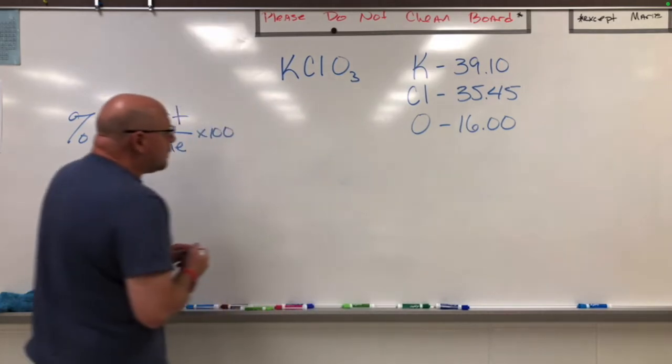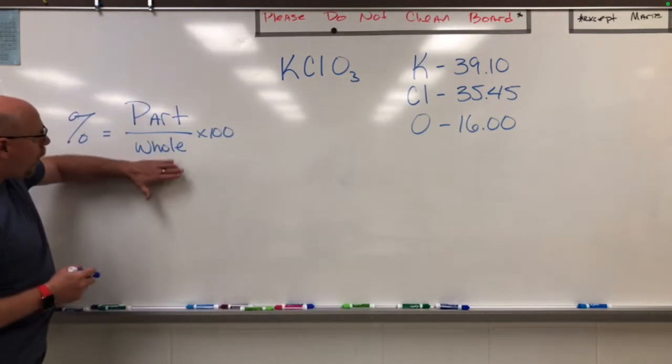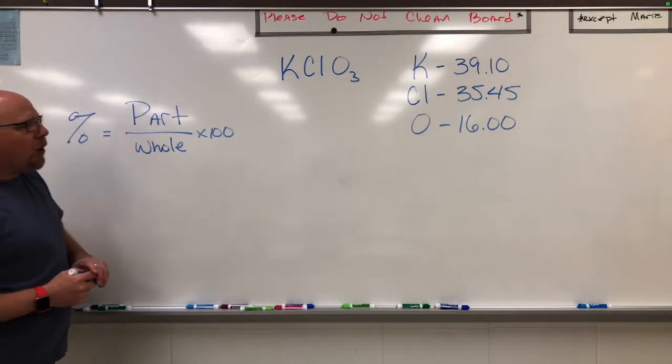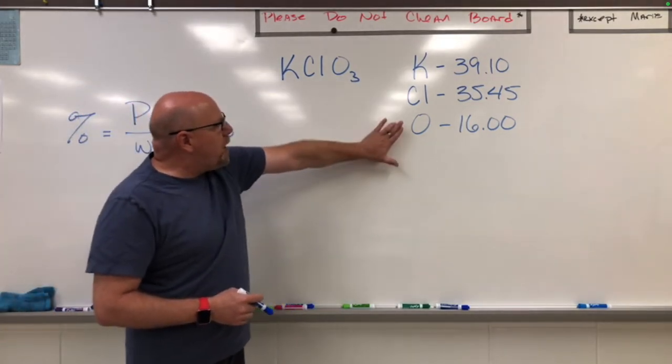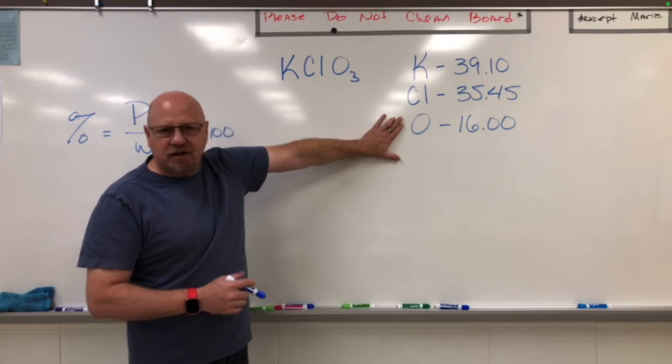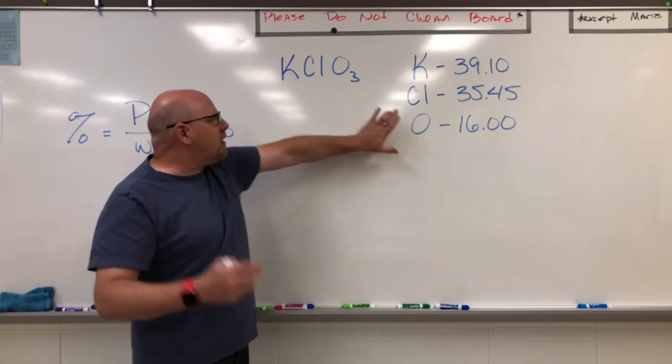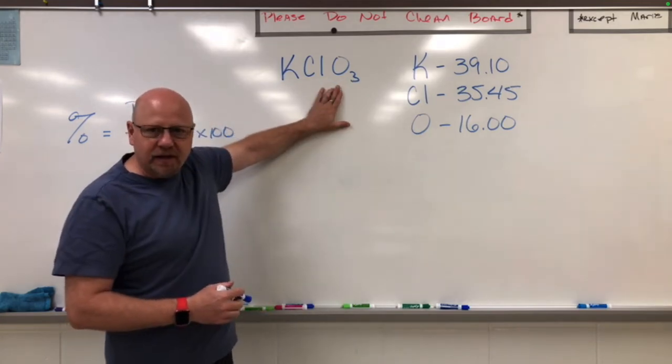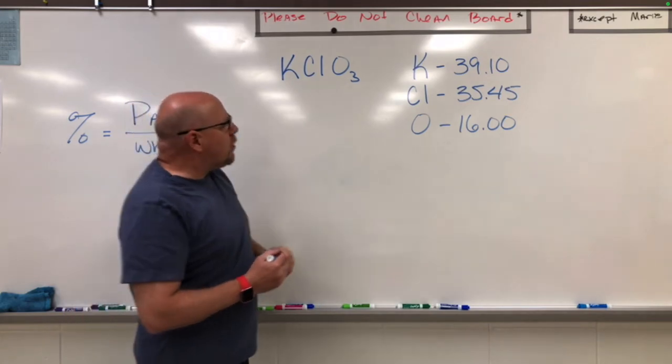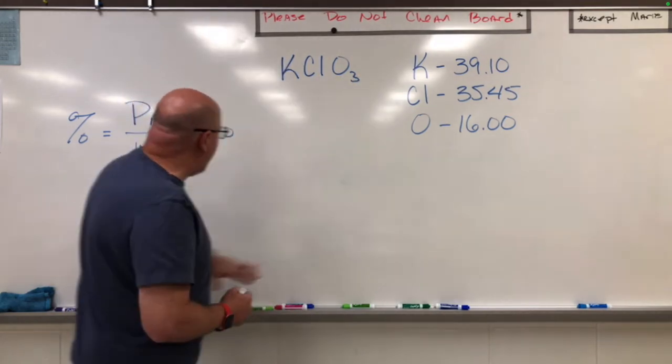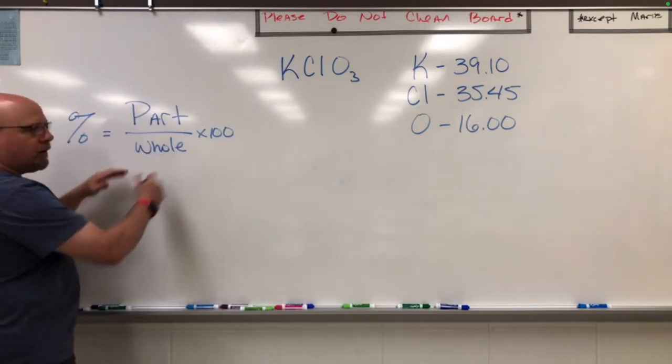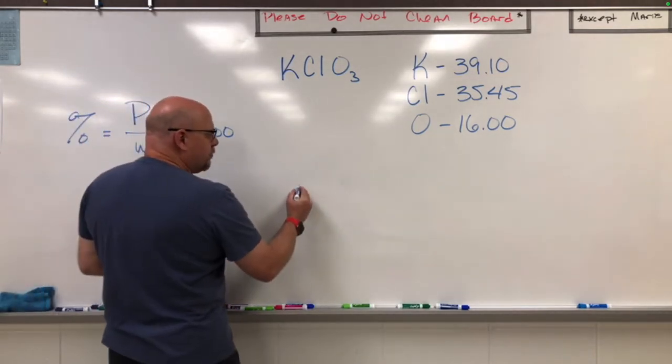When we go to determine the whole mass for this compound, we need to add up these values here, but we're going to have oxygen three times, and that's because there are three oxygen atoms in that compound. So we add up that mass for this entire compound, and this is going to be our whole, that's going to be 122.55.